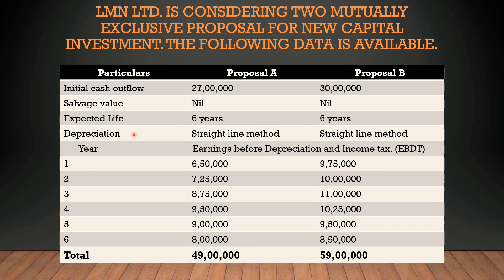Depreciation is as per the straight line method. Under straight line method, you simply divide total investment by number of years. So 27 lakhs divided by six years gives four lakh fifty thousand rupees — that is the depreciation for every year for Proposal A. For Proposal B, 30 lakhs divided by six years gives five lakh rupees per year as depreciation.